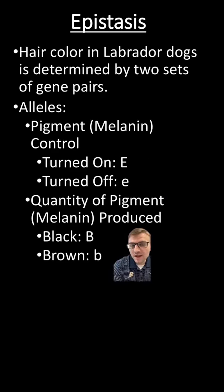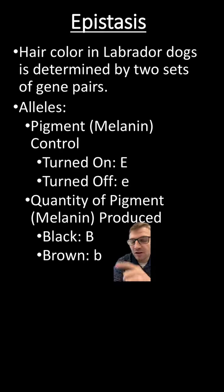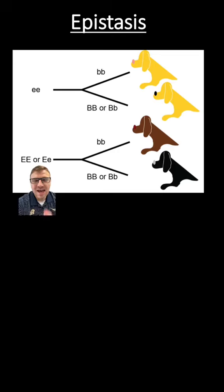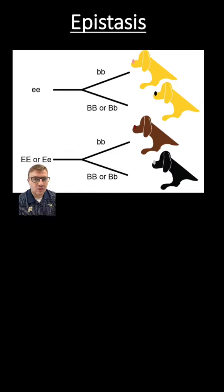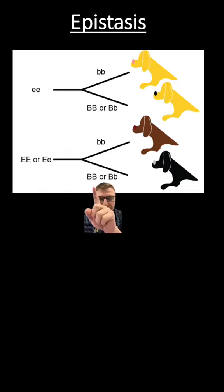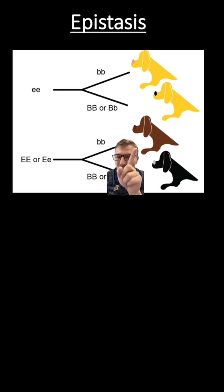The quantity of pigment is the second gene. The capital letter here creates black fur, and the lowercase letter here produces brown fur. As you can see, in this first genotype, as long as there's one capital letter, the second genotype will produce its color. So BB or Bb will create a black lab, and bb will produce the brown lab.